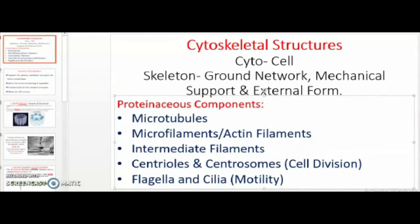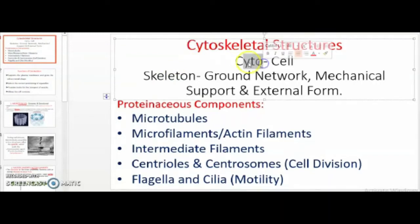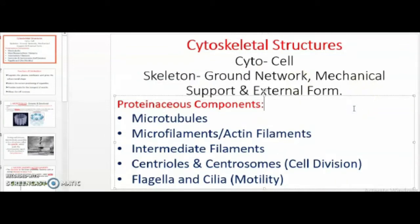Cytoskeletal structures are basically a group of organelles in the cell which are meant to provide structure, shape, and stability. Biology is all about splitting the terms — cytoskeletal is made up of two words: cyto and skeleton. Cyto refers to cell, and skeleton refers to anything which provides structure, mechanical support, and form. Cytoskeletal structures are mostly proteinaceous in nature, meaning these are different kinds of protein molecules which make up the cytoskeleton.